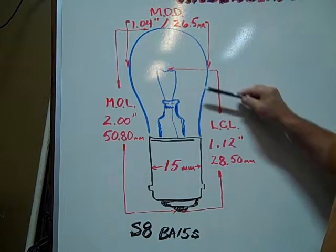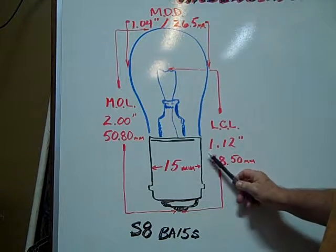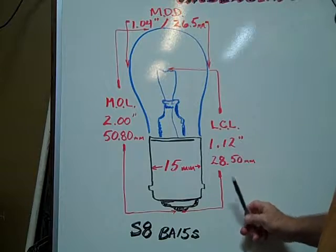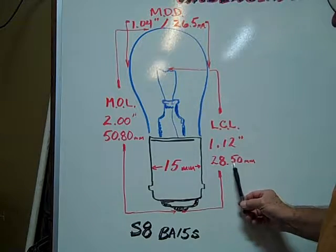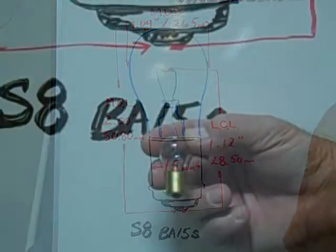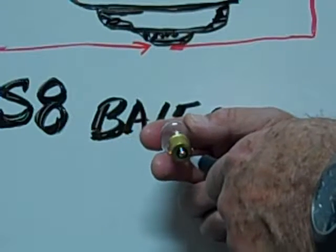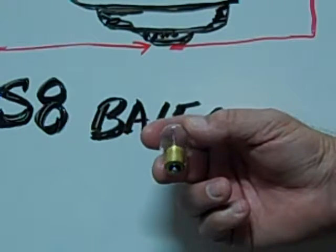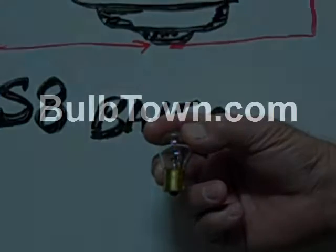The light center length is 1.12 inches or 28.50mm. This is an example of a number 1250 miniature bulb.